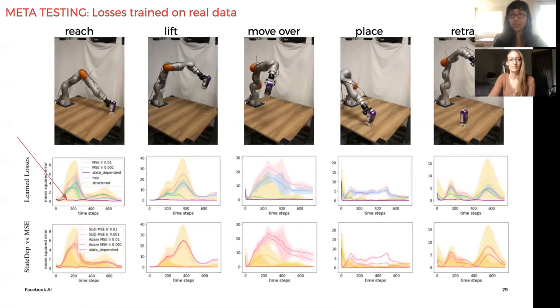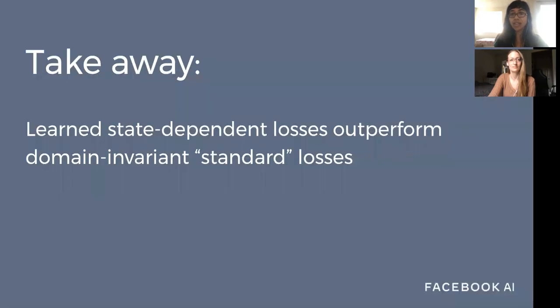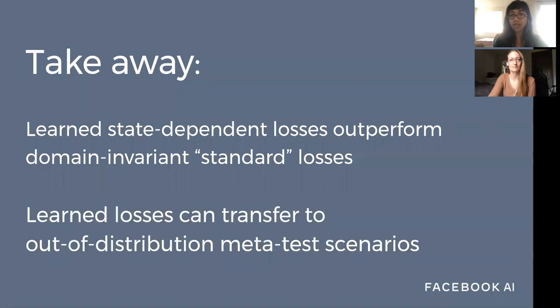Online adaptation with state-dependent loss additionally outperforms controller training with MSE losses when using adaptive optimizers such as Adam. Our takeaway here is that the learned state-dependent loss outperforms domain invariant standard losses and learned losses can transfer to out-of-distribution meta-test scenarios.